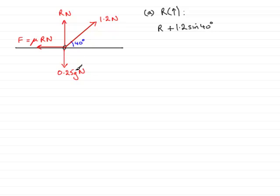Moving around to this force, all of the weight acts vertically down, opposing this direction here. So it will be minus 0.25g.